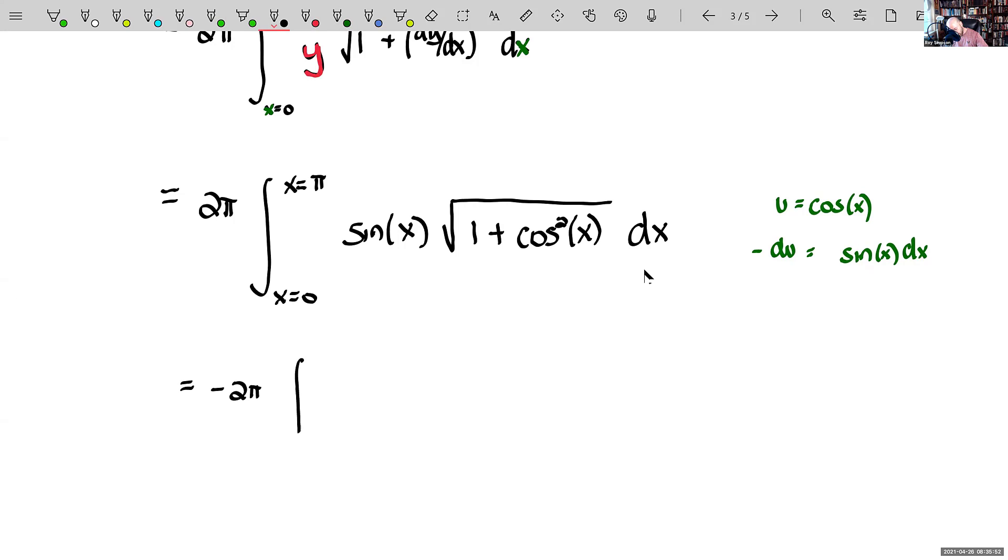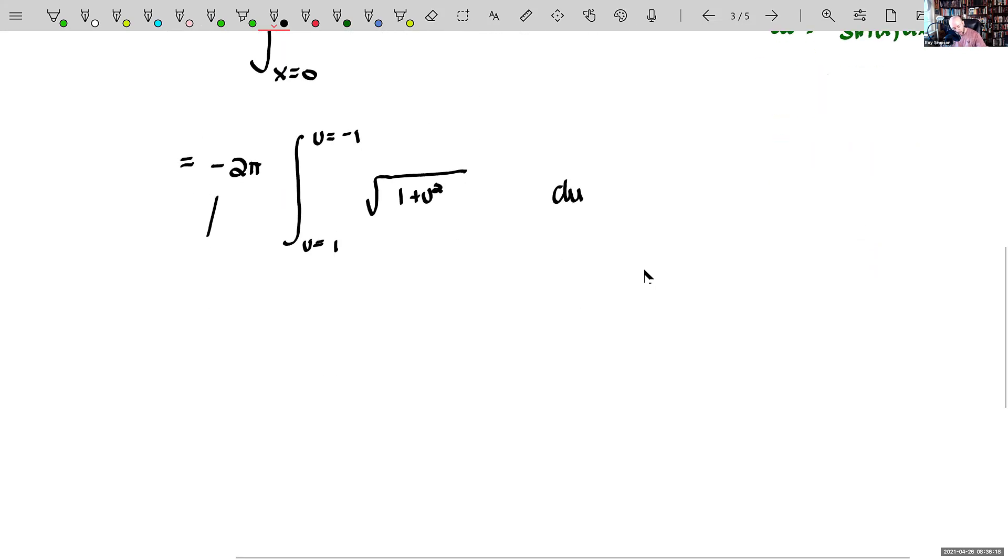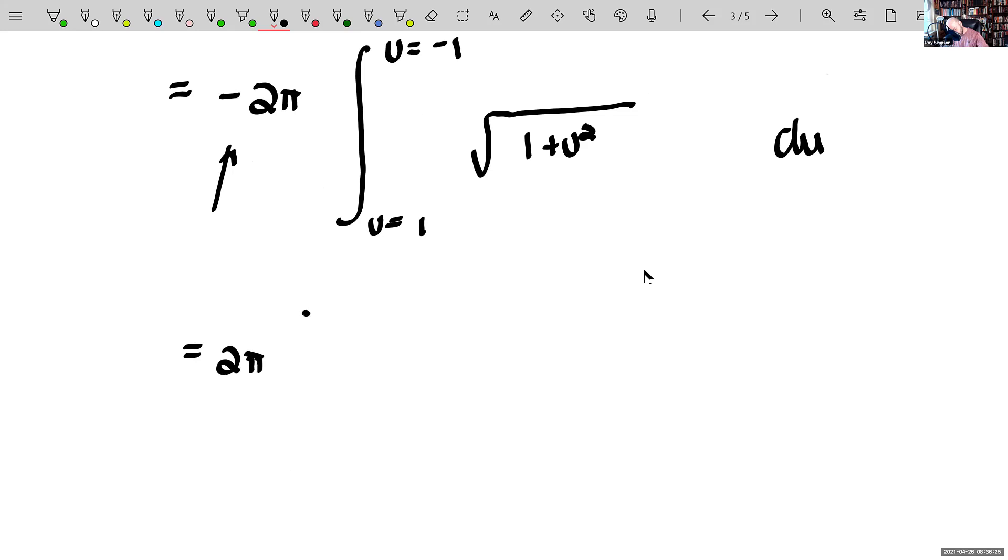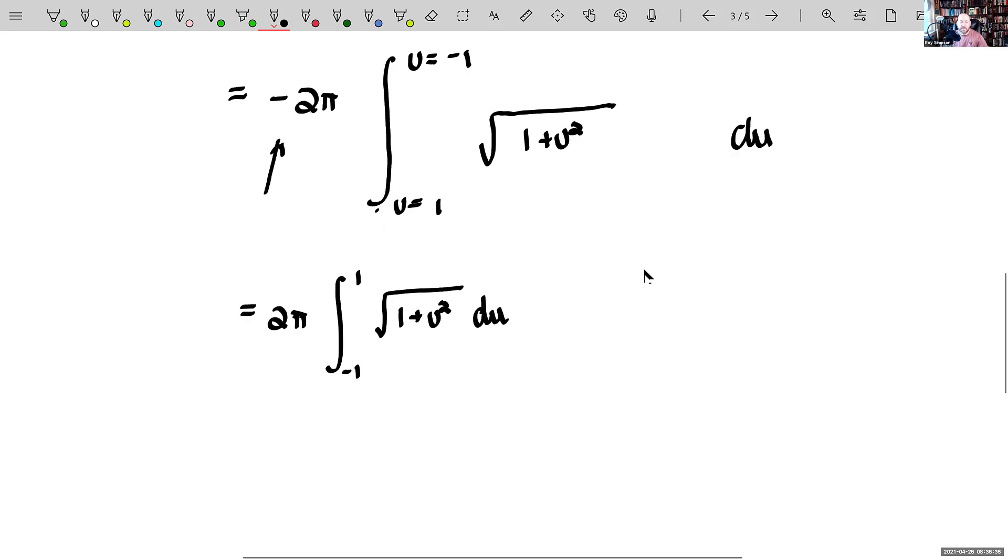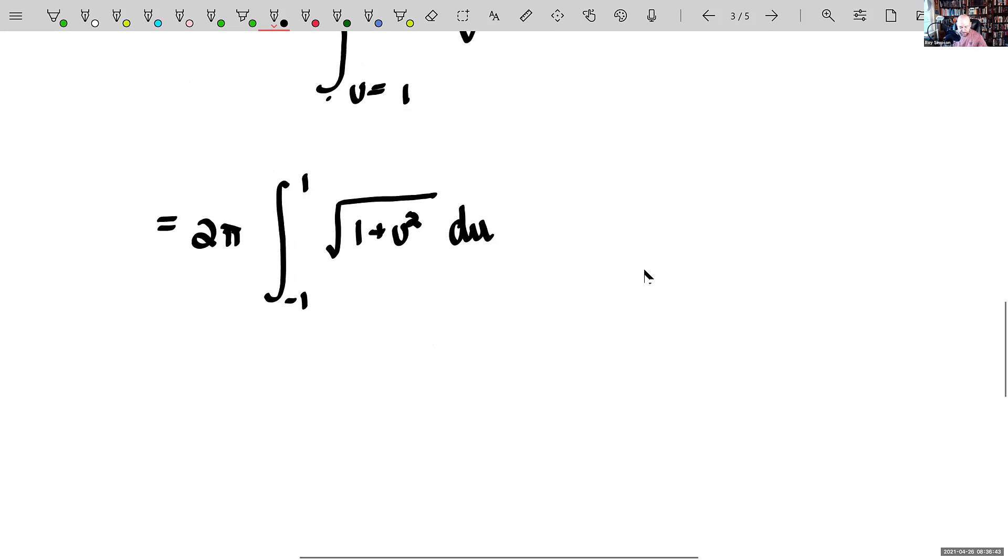And our limits of integration are going to change as well. Negative 2 pi integral u equals, when x is 0, cosine of x is 1. When x is pi, cosine of pi is a negative 1. We're stealing away the sine of x and the dx. We're trading those out for a du. And we have the square root of 1 plus u squared. And then you can change the limits of integration or flip them because that negative on the outside. Now, I may have mentioned this early in the course, but try to use symmetry as much as possible. The symmetry here for this integral, now that we've arrived at this, this function is an even function.